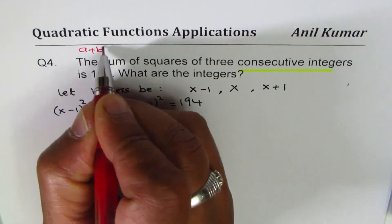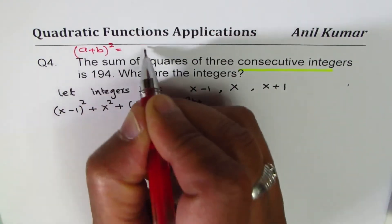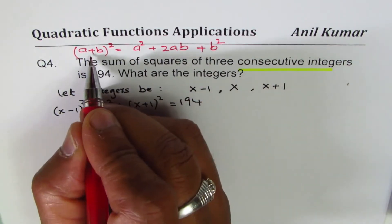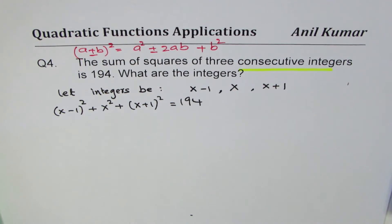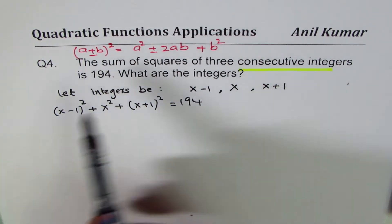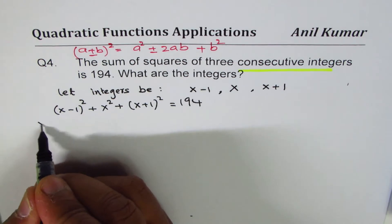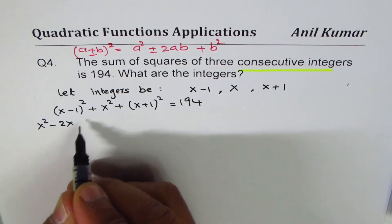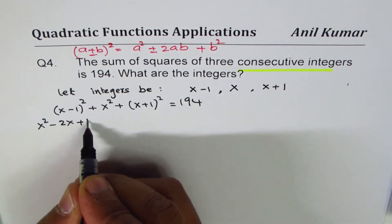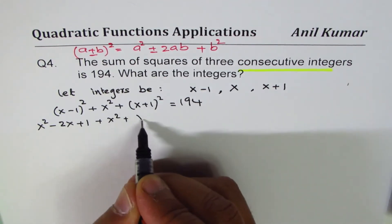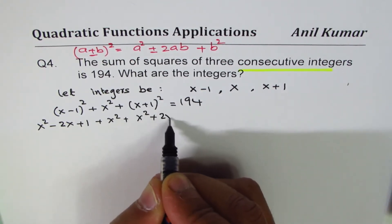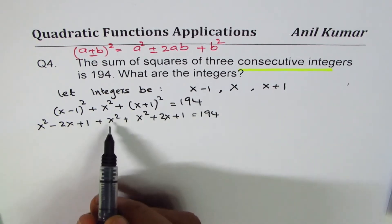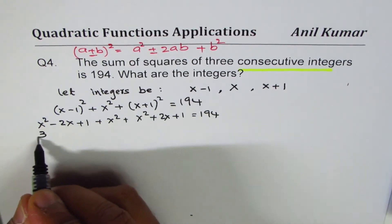To expand, we use the formula: (a plus b) squared equals a squared plus 2ab plus b squared. If it is minus, that becomes minus 2ab. Applying this: (x minus 1) squared gives x squared minus 2x plus 1; x squared stays; and (x plus 1) squared gives x squared plus 2x plus 1. So we have x squared minus 2x plus 1, plus x squared, plus x squared plus 2x plus 1, equals 194.